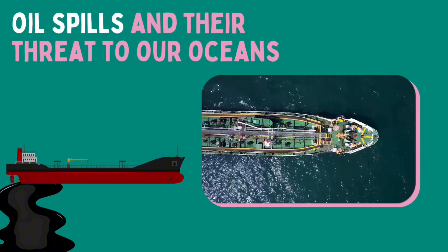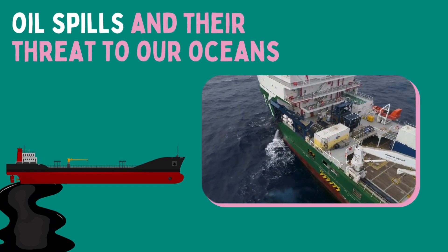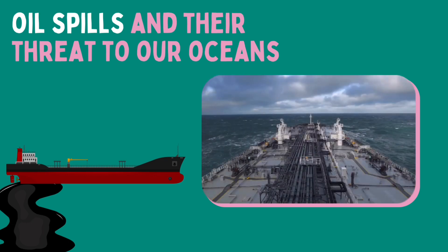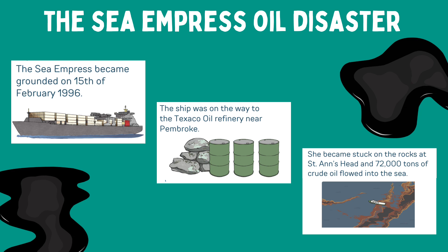There's another way that humans are having a negative environmental impact on our oceans. Let's learn more about oil spills and their threat to our oceans by looking at a particular case study: the Sea Empress oil disaster. The Sea Empress became grounded on the 15th of February 1996, on its way to the Texaco oil refinery near Pembroke on the west coast of Wales. She became stuck on the rocks at St Anne's Head and 72,000 tons of crude oil flowed into the sea.